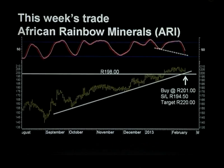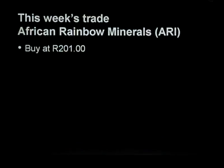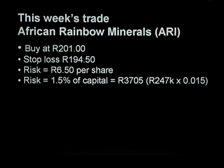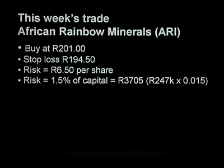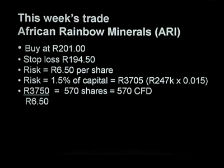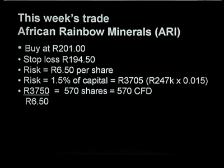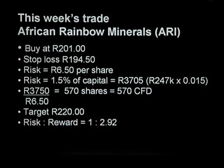So you're looking for almost a 10% gain — and that gives a risk-to-reward ratio of nearly three to one. To take you through the mechanics: buying at 201 Rand, stop loss at 194.50, the risk is 6.50 per share. I'm risking 1.5% of our trading capital. We have about 247,000 Rand at our disposal, so 1.5% is 3,705 Rand. Dividing portfolio risk by risk per share gives us 570 shares — each share equates to one CFD — so I've bought 570 CFDs. The target is 220 Rand and the risk-to-reward ratio is 1 to 2.92, so almost 3 to 1.